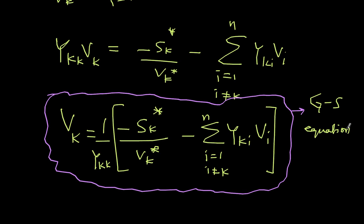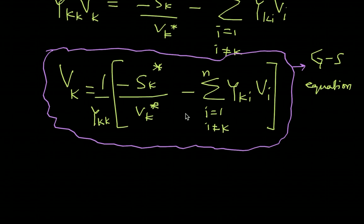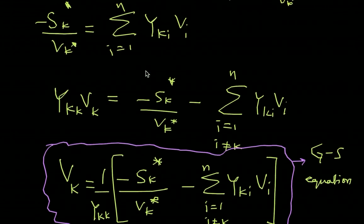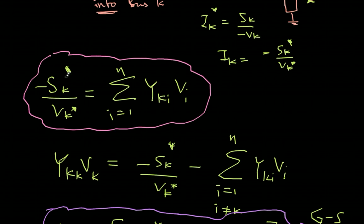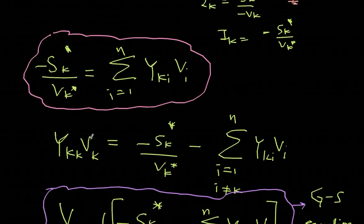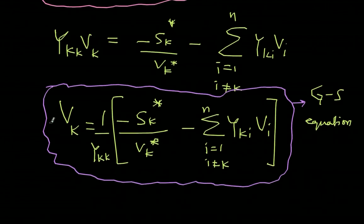This Gauss-Seidel equation works as long as the right-hand side is known. However, sometimes you don't know the load at a bus because there is a generator there, and Q is unknown. To address that, let's step back and derive what Sk is from a different route — instead of solving for Vk, we solve for Sk.